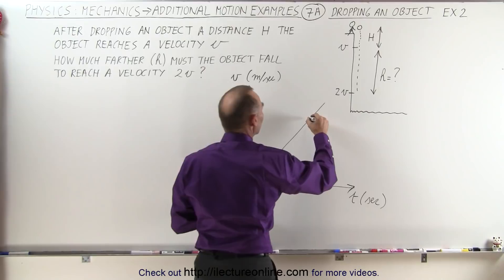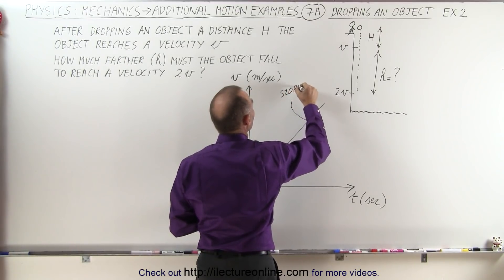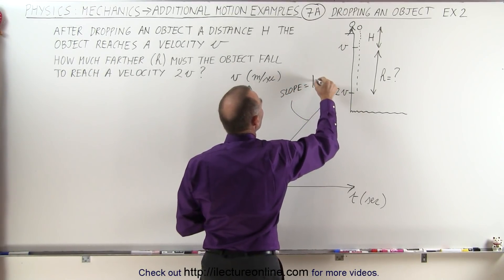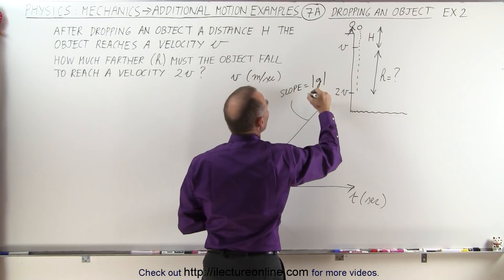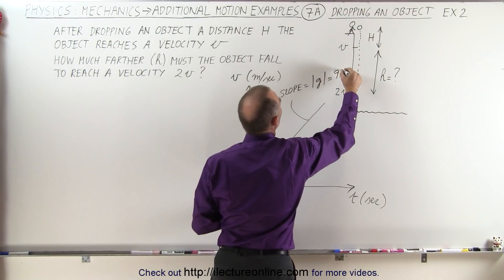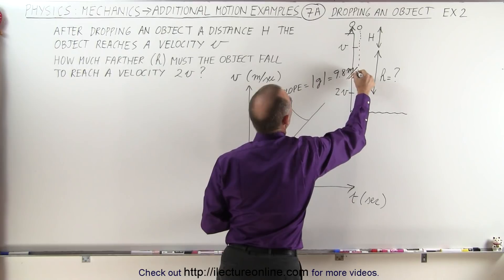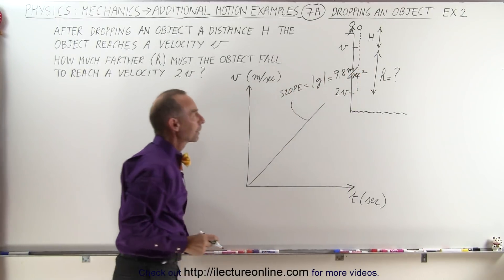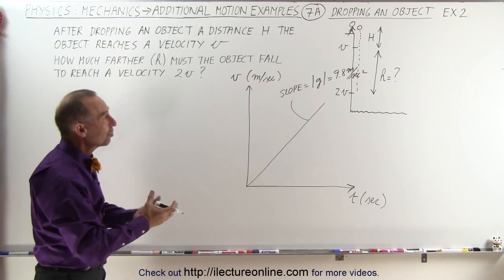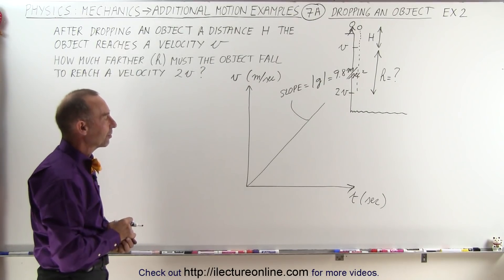This means that the slope here of that graph is going to be representative of the absolute value of g which is equal to 9.8 meters per second squared. We'll call it positive again because we're simply going to call it positive velocities.